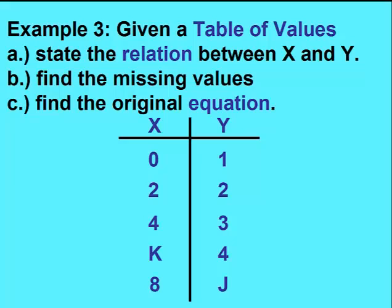In this example, we'll work backwards. We'll start with a table of values, state the relation between x and y, find the missing values k and j, and then attempt to find the original equation.